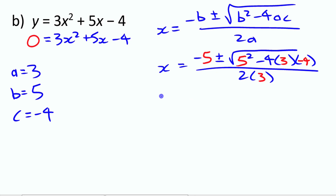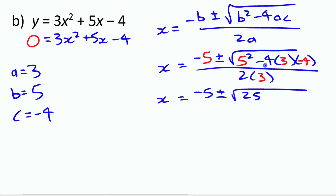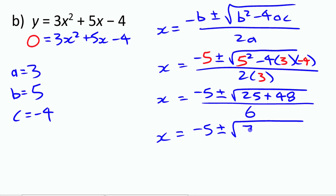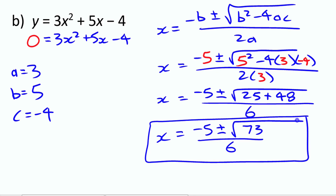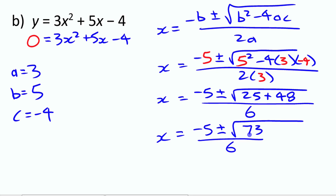Simplifying: we get negative 5 plus or minus the square root of 25. For the second term under the radical, we have 4 times 3 times 4 = 48, and because of the two negative signs it becomes plus 48. So that's the square root of 25 + 48 = square root of 73, all over 6. This is not a perfect square, so the exact answer is: x equals (negative 5 ± √73) / 6.